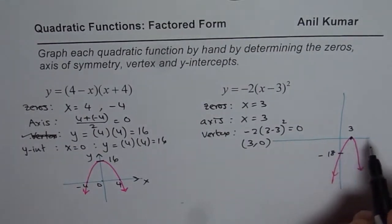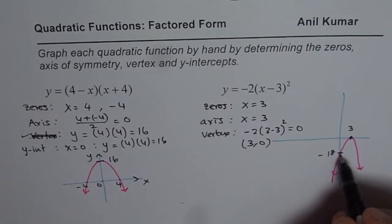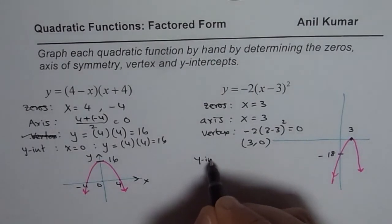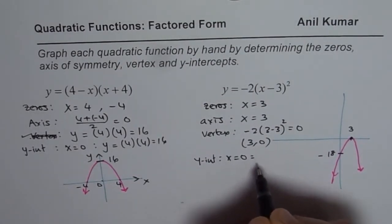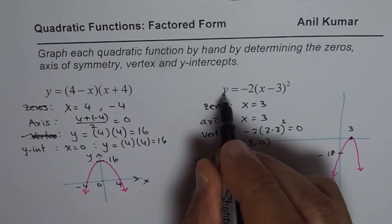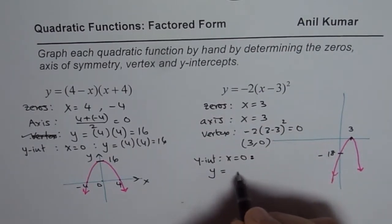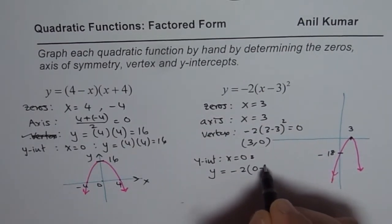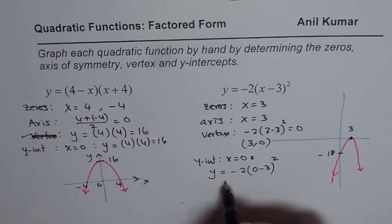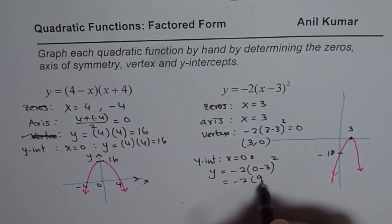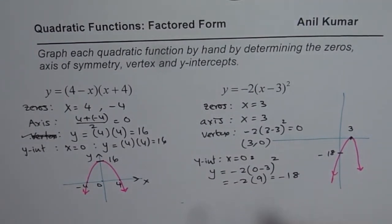And to find the y-intercept, we have to substitute x equals 0. So for x equals 0, we have to find what y value is. So we say y equals -2(0 - 3)². And that gives you -2 times 9, which is minus 18.